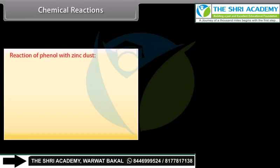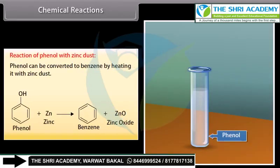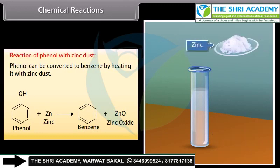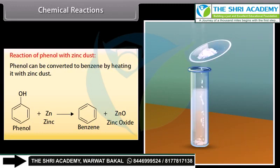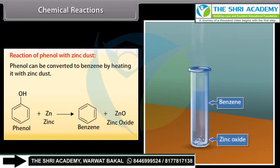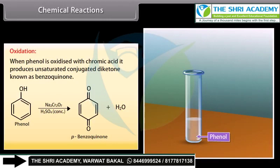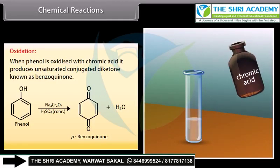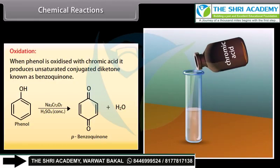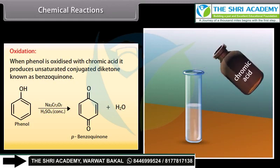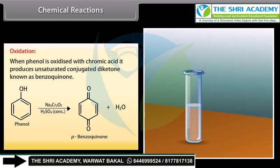Reaction of phenol with zinc dust: Phenol can be converted to benzene by heating it with zinc dust. Oxidation: When phenol is oxidized with chromic acid, it produces an unsaturated conjugated diketone known as benzoquinone.